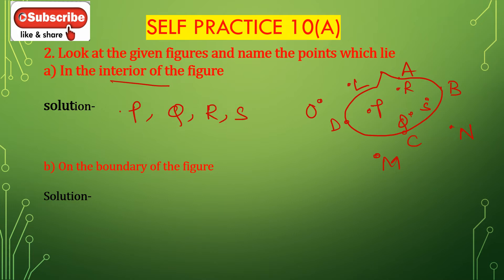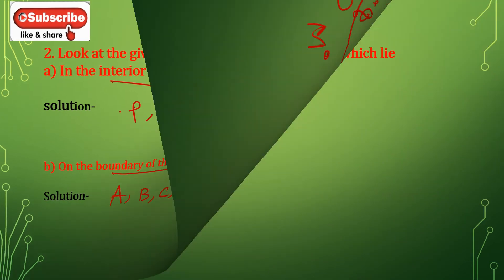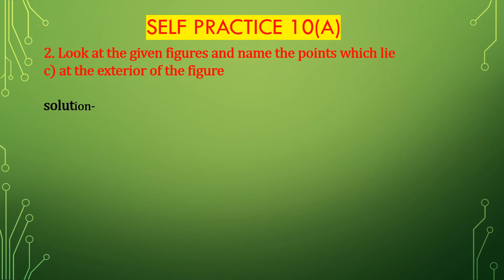B: name the points which lie on the boundary of the figure. The points which are on the boundary of the figure are A, B, C, and D. A, B, C, and D are the points on the boundary of the figure.